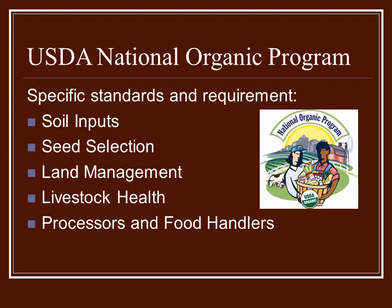The USDA's National Organic Program, or what we'll be referring to quite often as the NOP, gives specific standards and requirements for agriculture, for growers. So they determine what's okay to use for soil inputs, seed selection — if you're certified organic and you want to buy seeds, you have to buy certified organic seed. Also land management: what you do with your land, how you weed, how you compost — all of that has standards that have to be met.